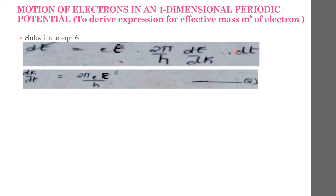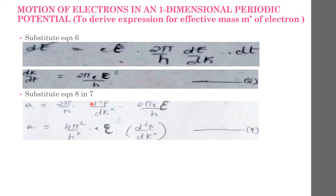Rearranging, we get dK/dt = 2πeε/h, equation 8. Substituting equation 8 in equation 7 for acceleration: a = (2π/h)(d²E/dK²)(2πeε/h), which becomes a = (4π²/h²) × eε × (d²E/dK²), equation 9.